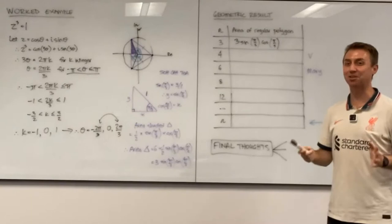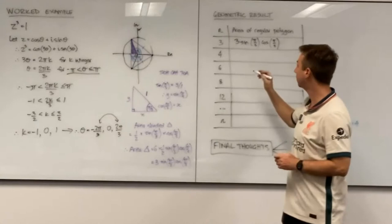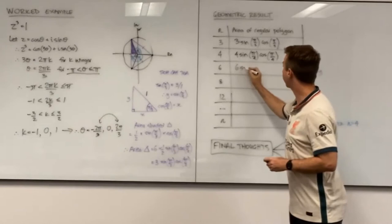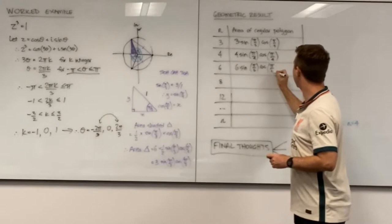Okay, so everyone's had their chance to work through. So V, do you want to yell out what you got for your result? I got 4 sin π/4 cos π/4. Very nice. And Mary, what did you get? I got 6 times sin π/6 times cos π/6.